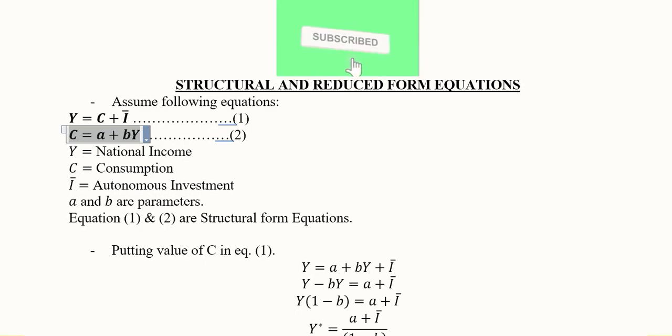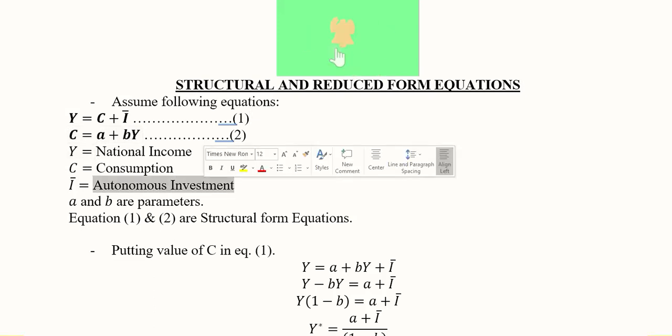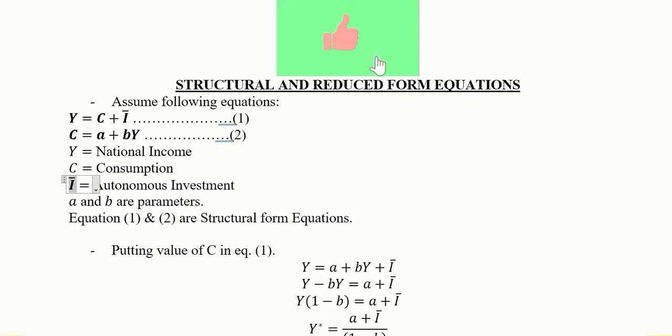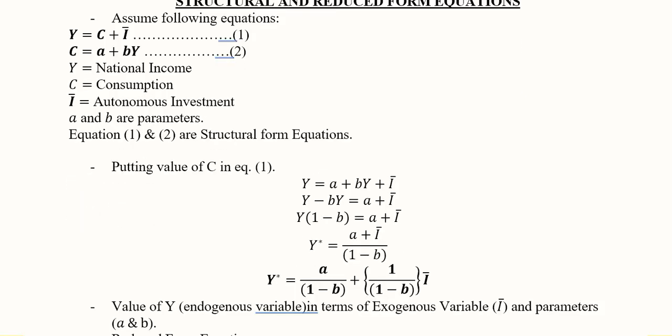These are structural equations because they define the structure of the variables in the economy, that is the national income, consumption, and investment. Investment is autonomous in this case. It can also be induced, that is another possibility, but here the simple case is considered where investment is autonomous.